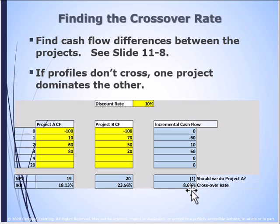The crossover point is 8.68%. As a manager, this tells us that if the discount rate is less than the crossover rate, project A's net present value would actually be greater than project B's. If your discount rate — your weighted average cost of capital — were higher, say 10%, then the second project, S, would be a better project. This helps management understand the relationship between the values of the projects and the cost of financing those projects.